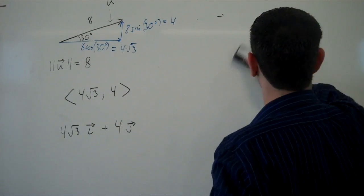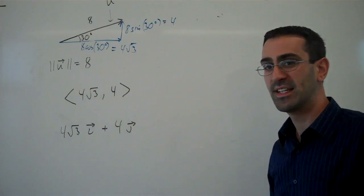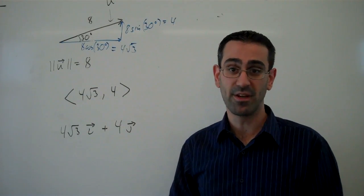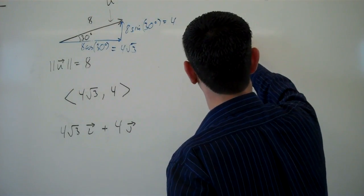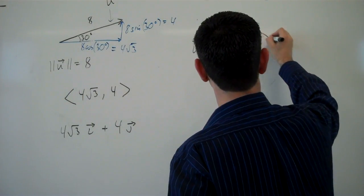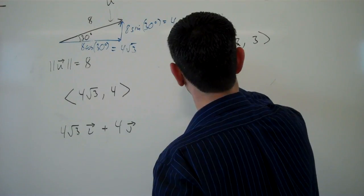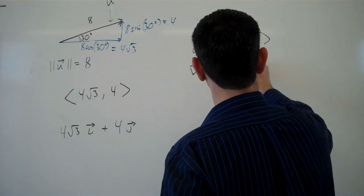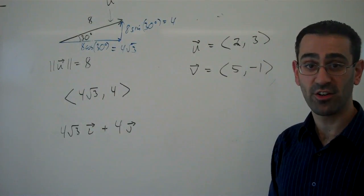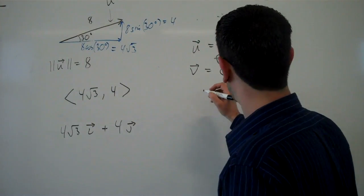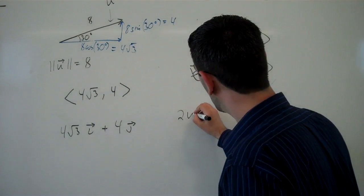Now one of the nice things about components of vectors is that it makes it very easy to combine vectors. If I had vector u which was (2, 3) and vector v which is (5, -1), then it's very easy for me to either scale or add these vectors.